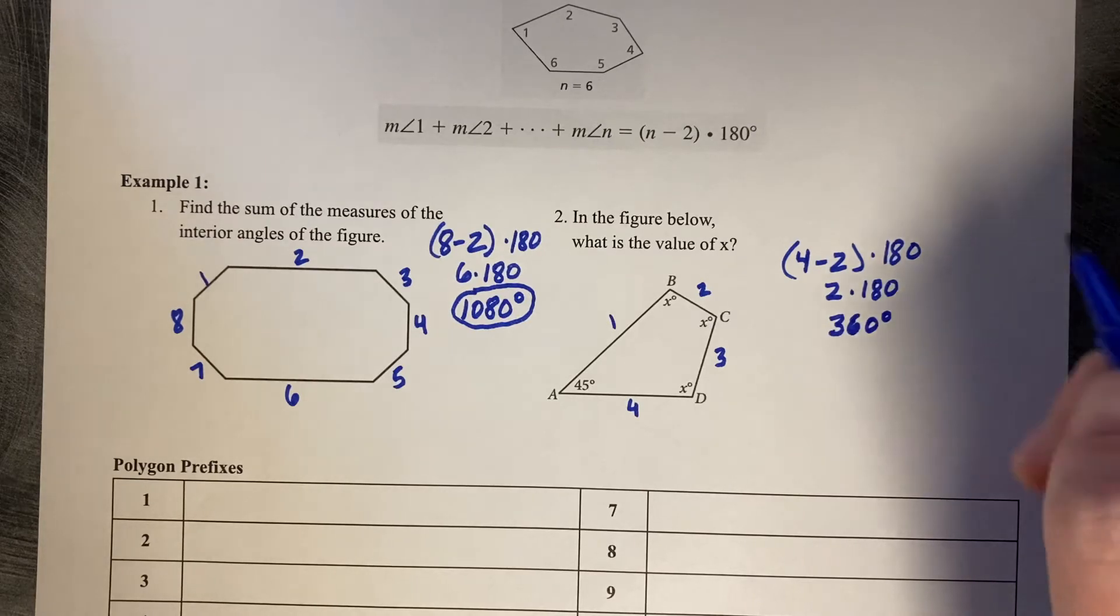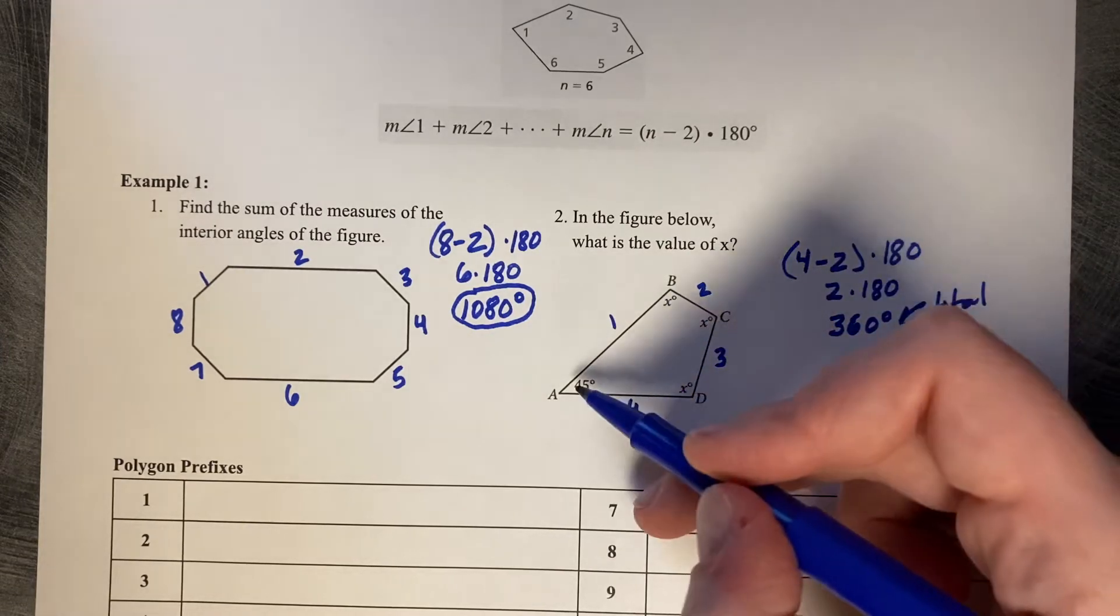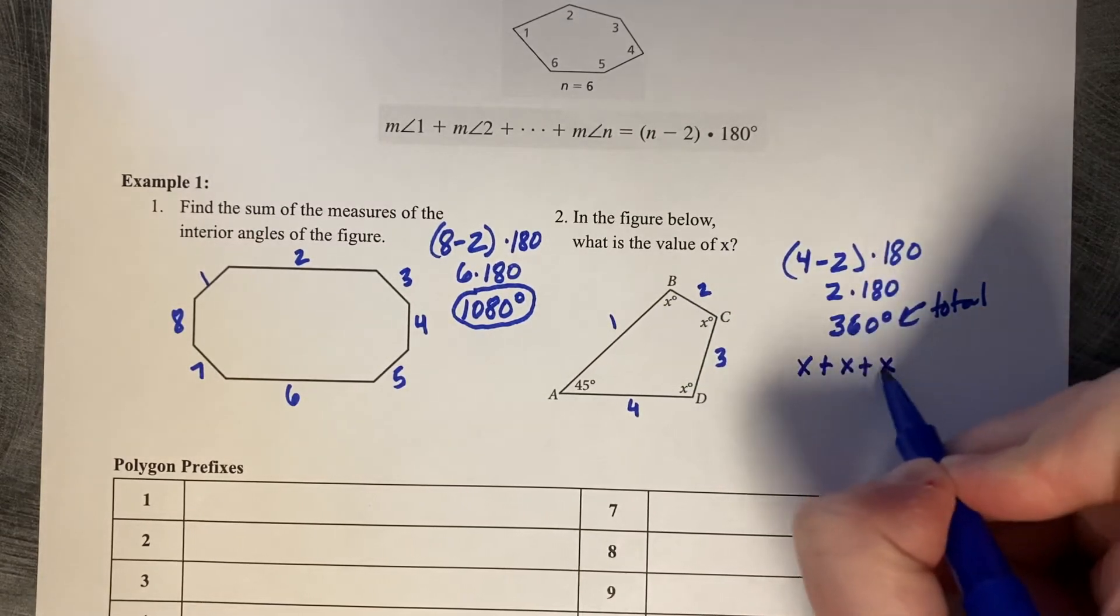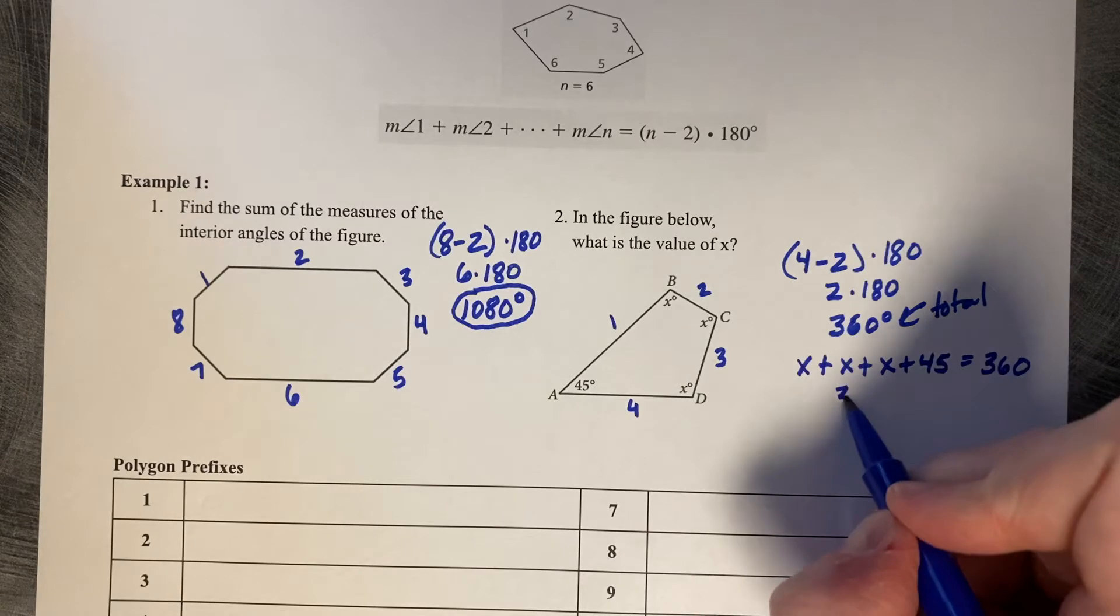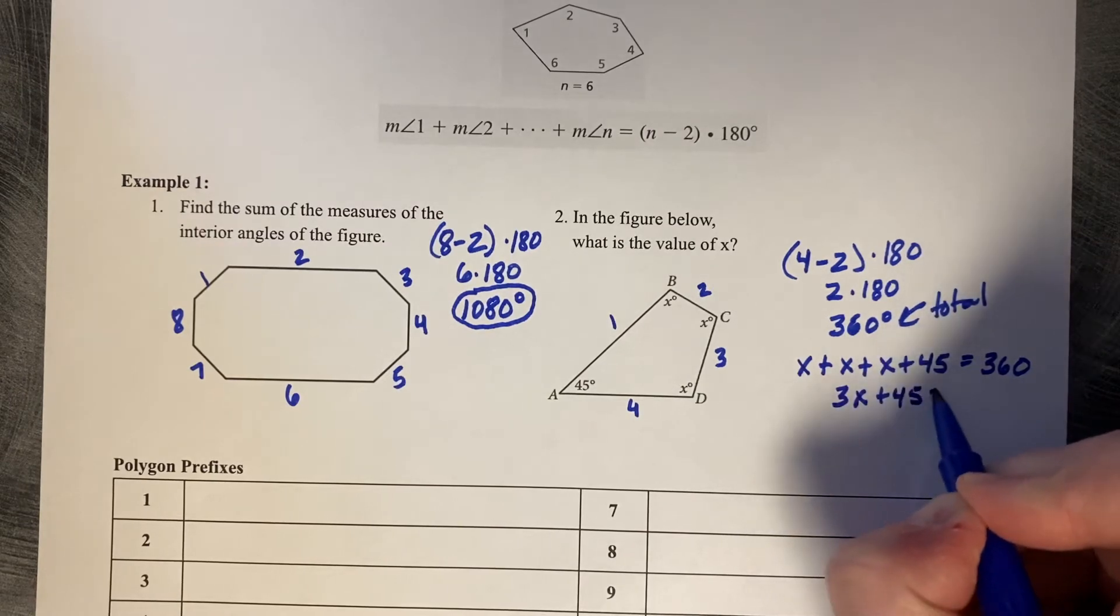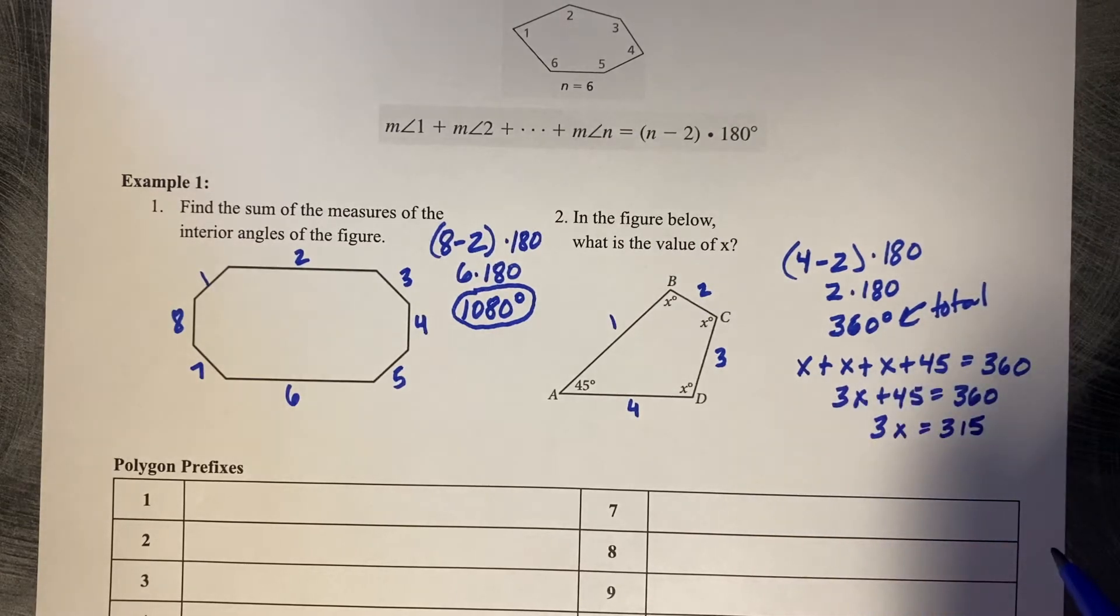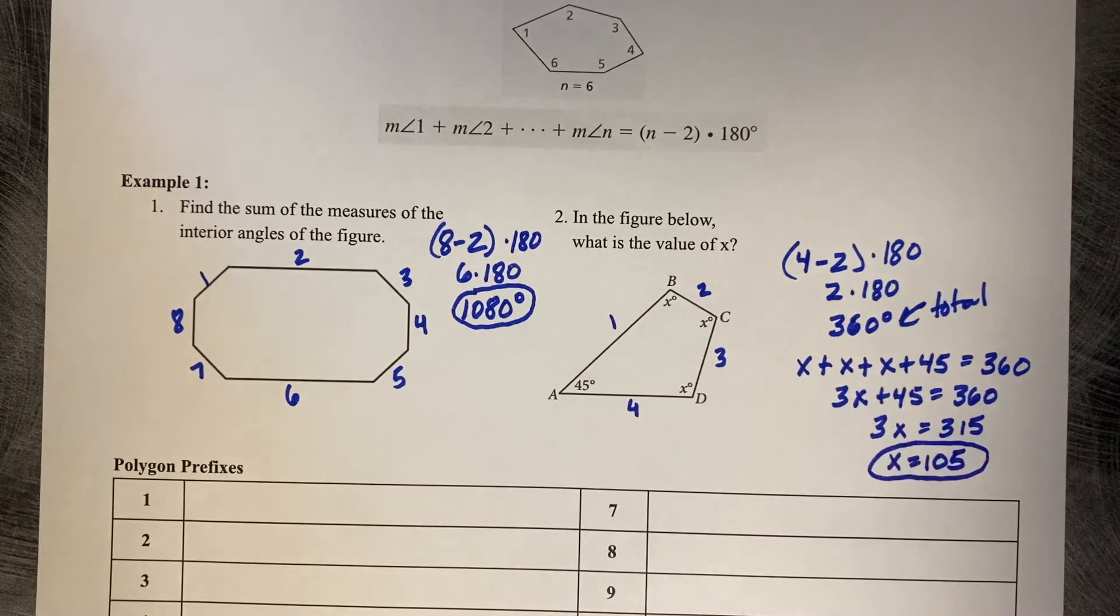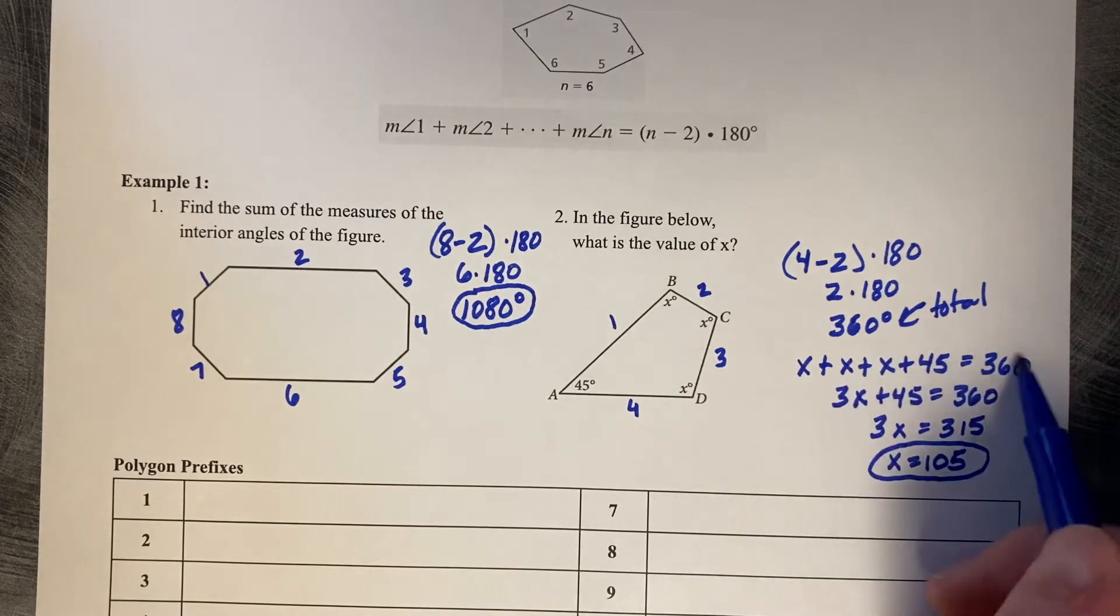Now that I know that there's a total of 360, I can use that to write an equation. x plus x plus x plus 45 is going to be a total of 360. So 3x plus 45 equals 360. Minus 45, 3x equals 315. Divide by 3 and x equals 105. So always get your total degrees first and then write your equation set equal to your total.